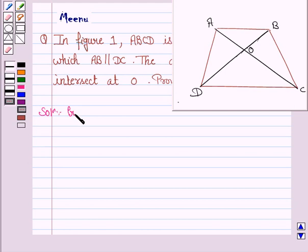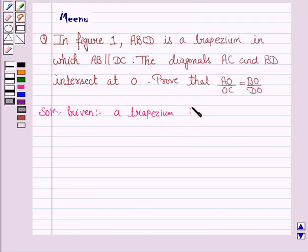Let's first write what is given to us. We are given a trapezium in which AB is parallel to DC and the diagonals intersect at O.